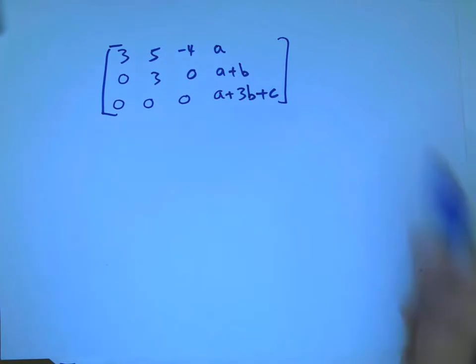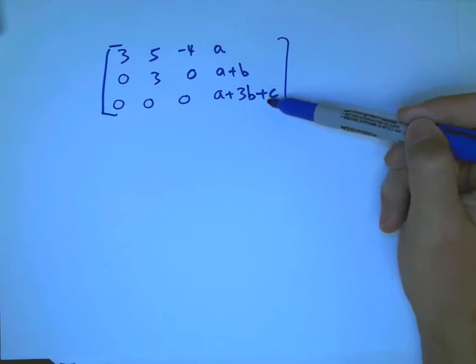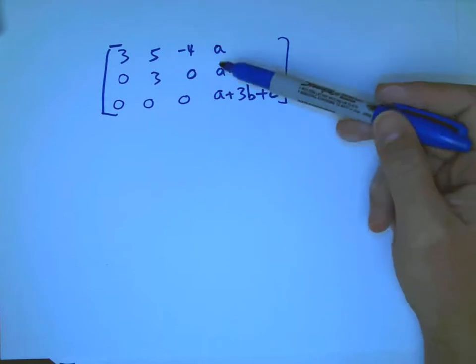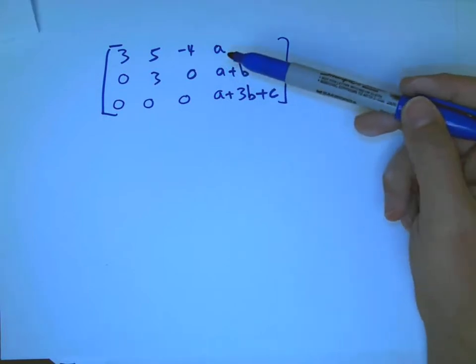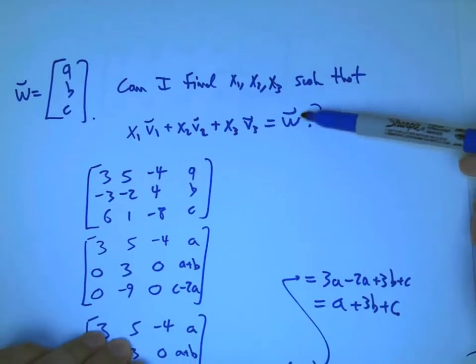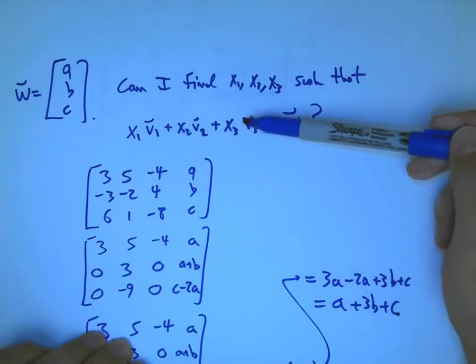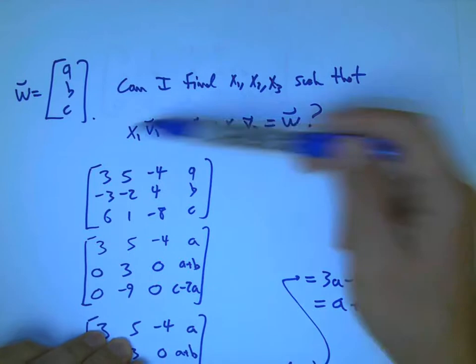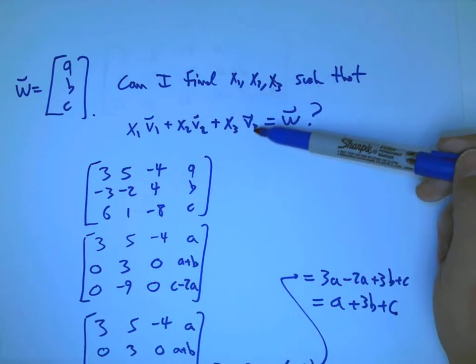And this is something to think about. This is a little bit of a sophisticated question. I'm not so much picking a specific a, b, c, and finding x1, x2, and x3. I'm not so much interested in picking one particular w and then figuring out how to make it out of v1 and v2 and v3.